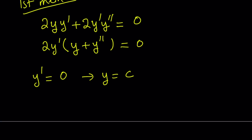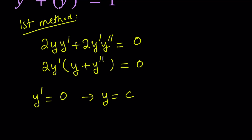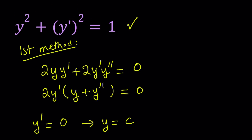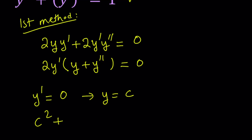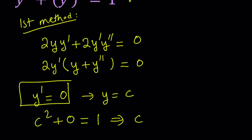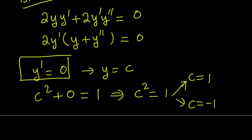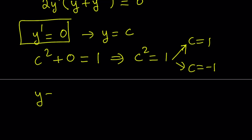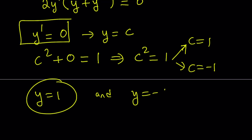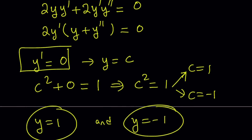We can determine that constant because we have a specific equation given. If you substitute y equals c into the original equation, y squared becomes c squared, and y prime is already 0, so c squared plus 0 equals 1. That gives c squared equals 1, so c equals 1 or c equals negative 1. Therefore our first solutions are y equals 1 and y equals negative 1.